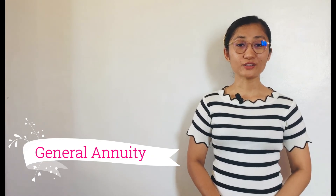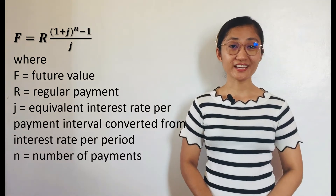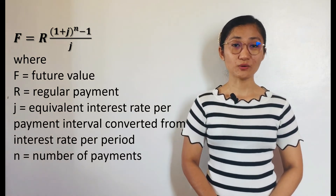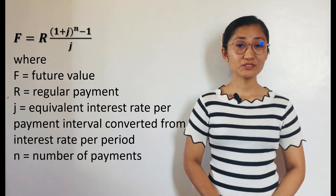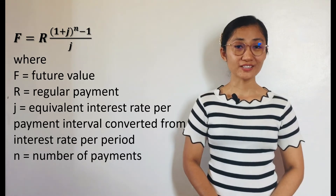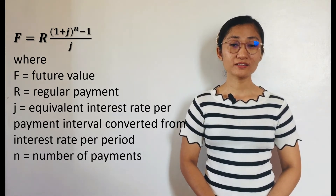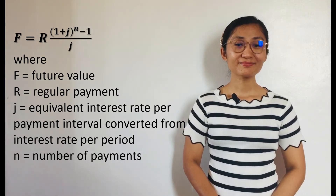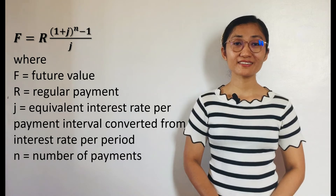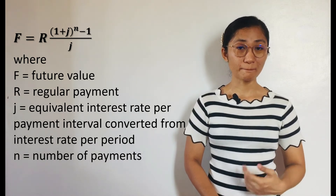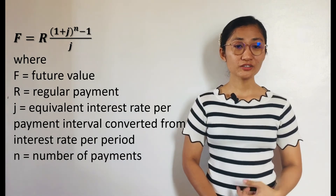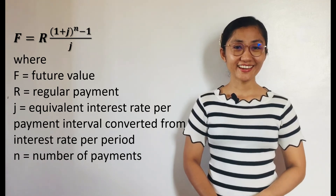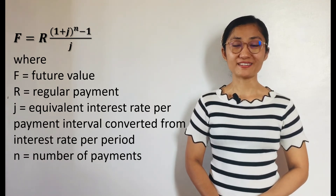To solve for the future value F of a general ordinary annuity, we use the formula F equals R times the quantity 1 plus J raised to the N, minus 1, over J. Where R is the regular payment, J is the equivalent interest rate per payment interval converted from the interest rate per period, and N is the number of payments.